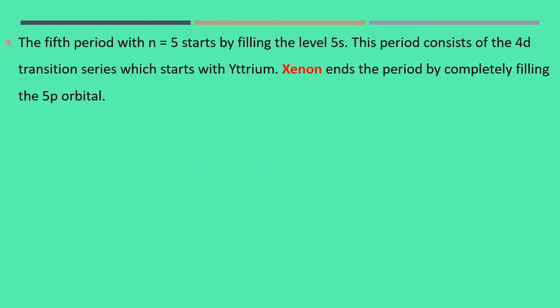The fifth period with N equal to 5 starts by filling the level 5s. This period consists of 4d transition series which starts with yttrium. Xenon ends the period by completely filling the 5p orbitals. Here also 2s blocks and 6p blocks, then 10d blocks, totally again 18 elements.